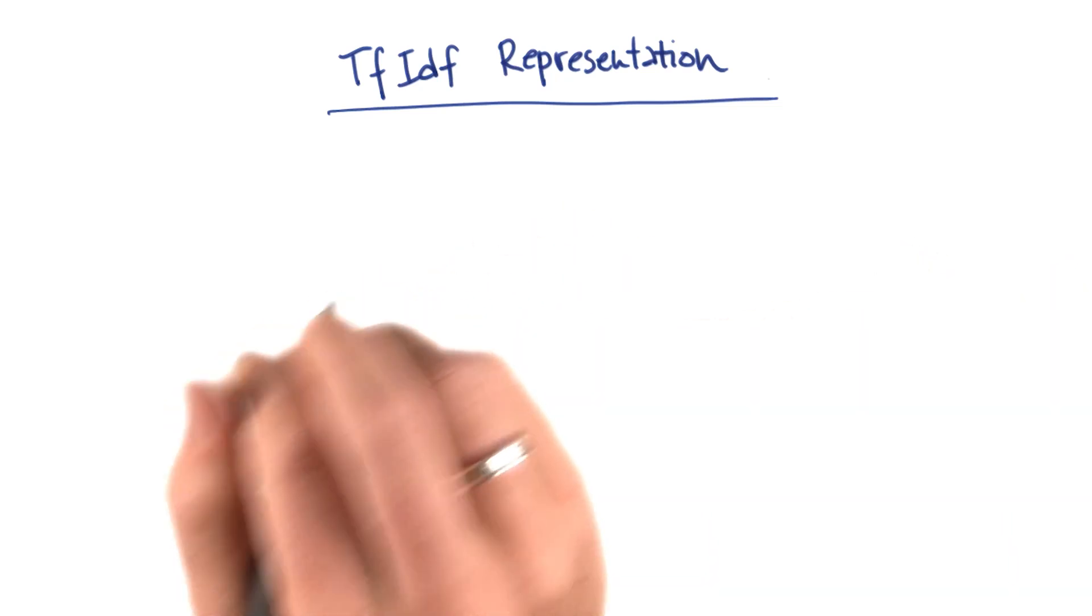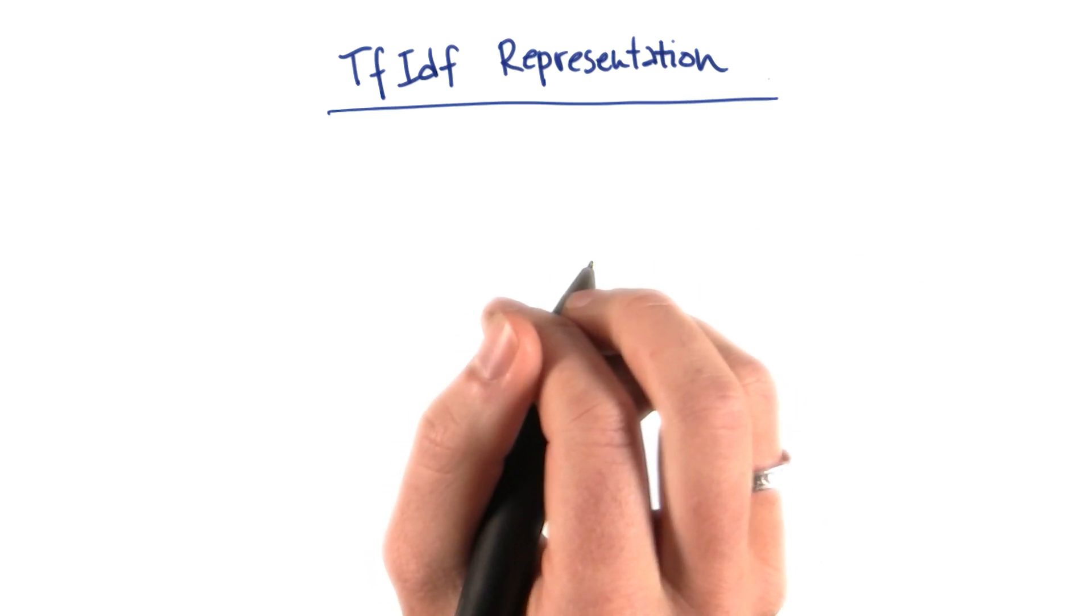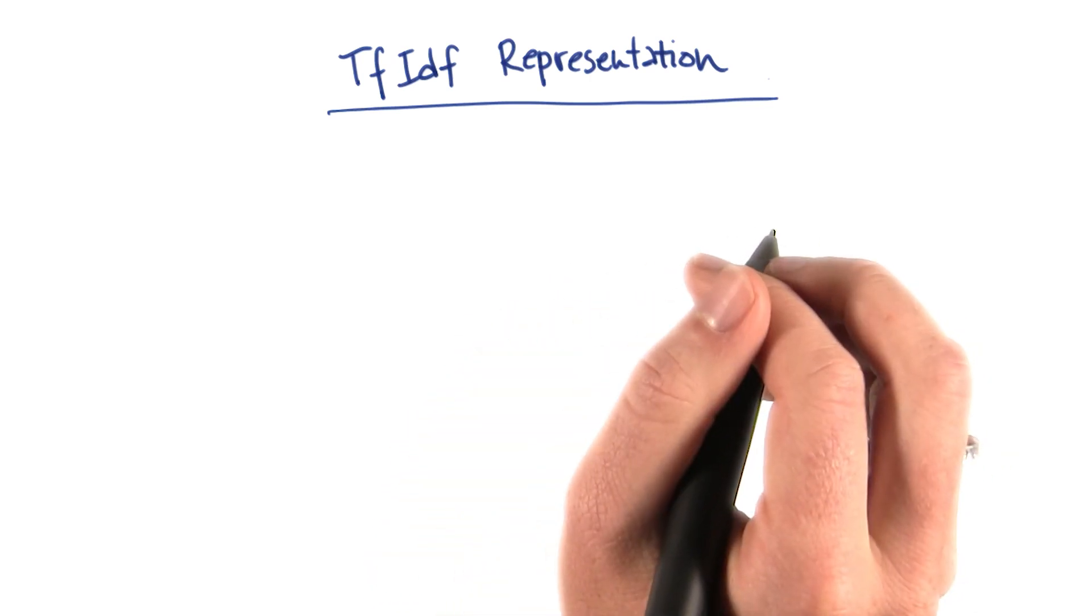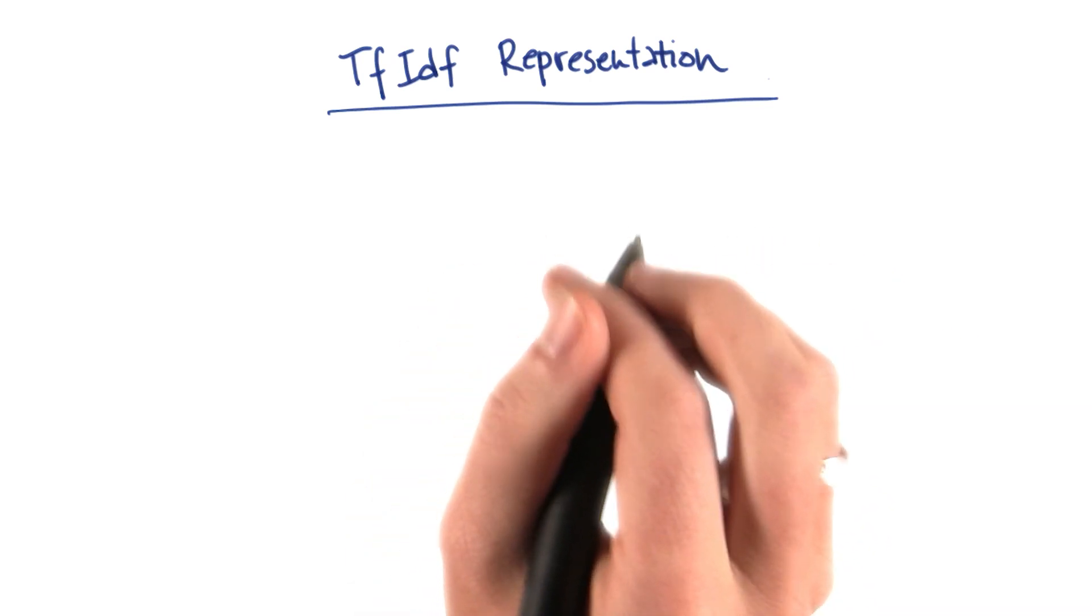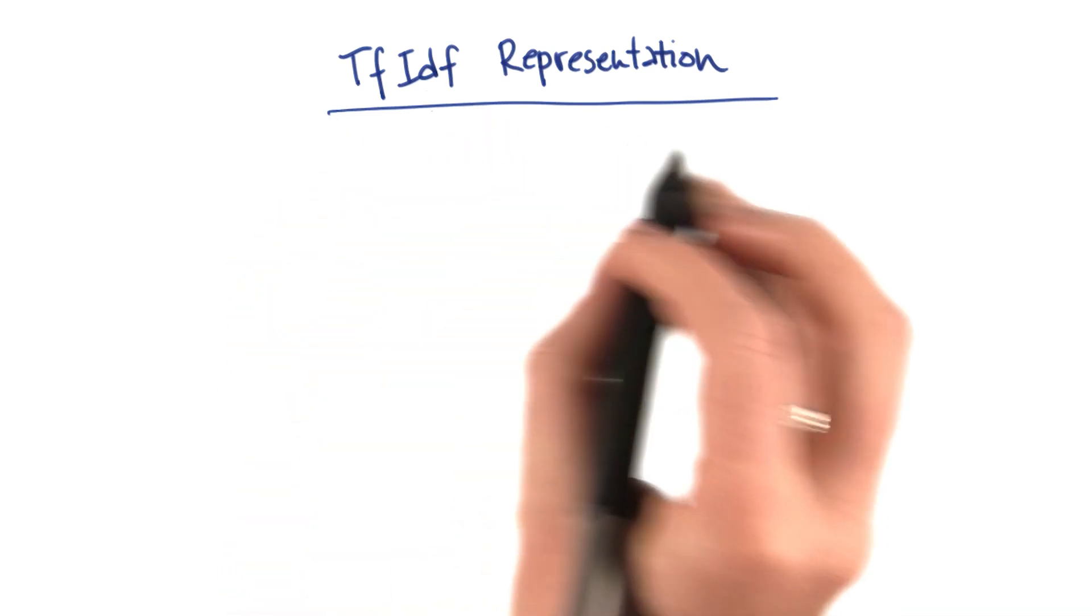Between stemming and the bag of words approach, I think you're ready to do a lot of really interesting things in text learning. There's one more representation that I want to teach you before we quit, though, because it's really cool. It's called the TF-IDF representation.